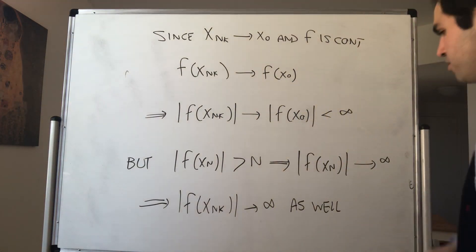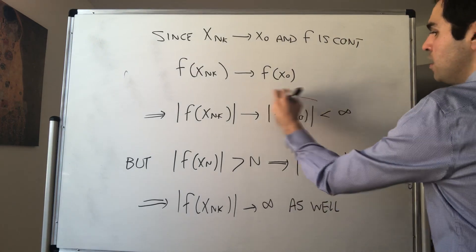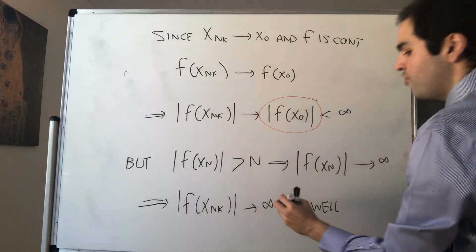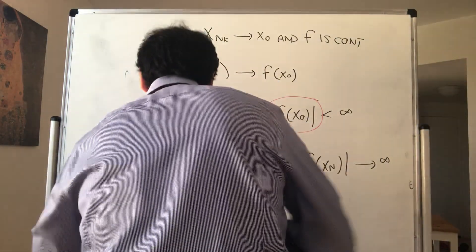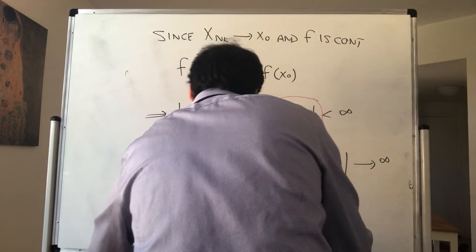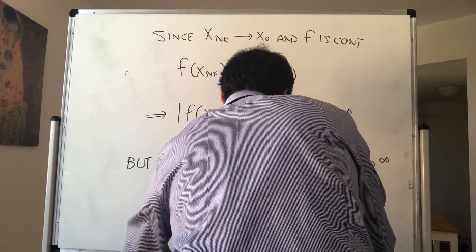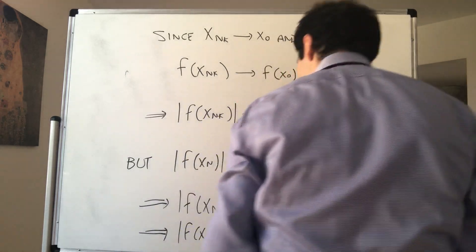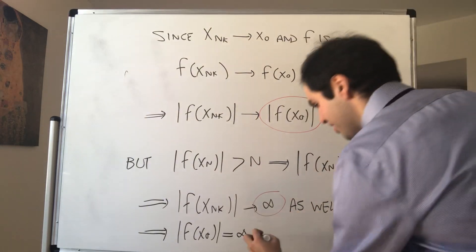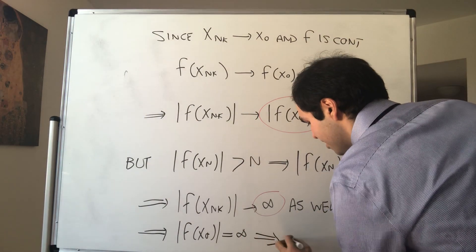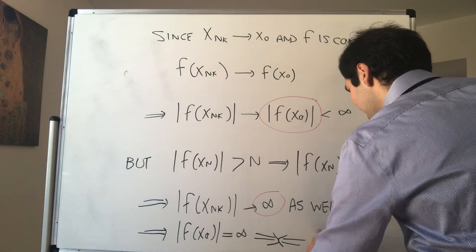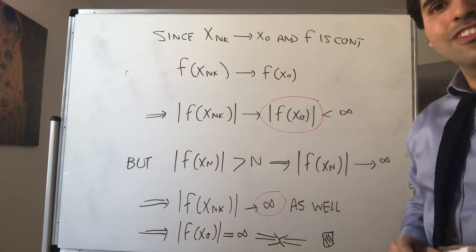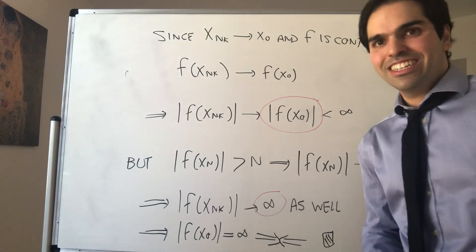But that's a problem, because now if you compare the two limits, on the one hand, it goes to this finite thing. On the other hand, it goes to infinity. But that just implies that f(x₀) equals infinity. And that's a contradiction. Makes no sense, because the values of a function should be finite. Alright, and that proves it, and thank you very much again.